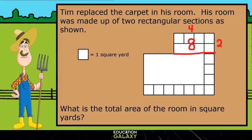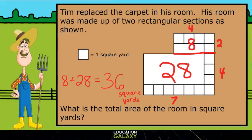Now for the bigger one, we have 7 times 4, which is 28. So to find our total, we add 8 plus 28, and we get 36. So our answer is 36 square yards.